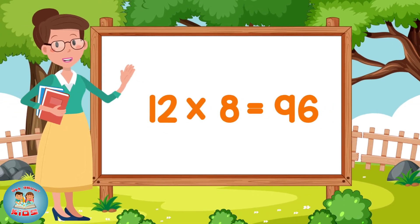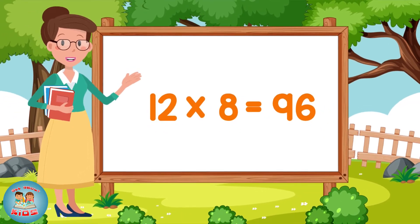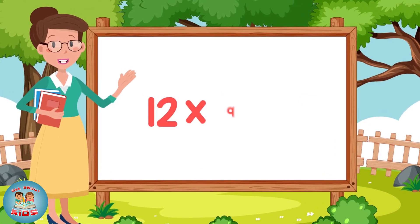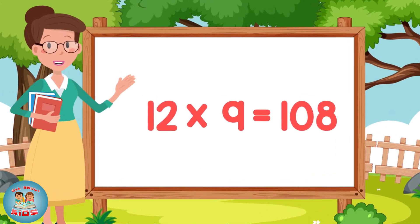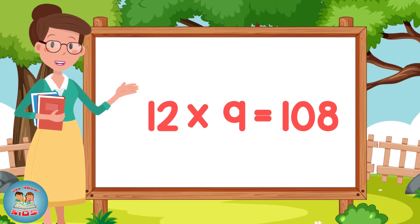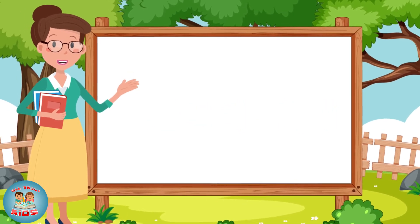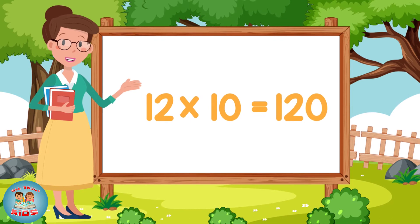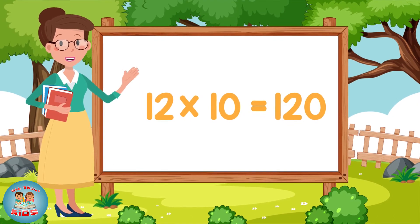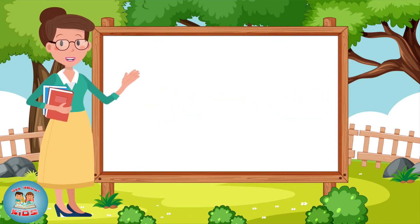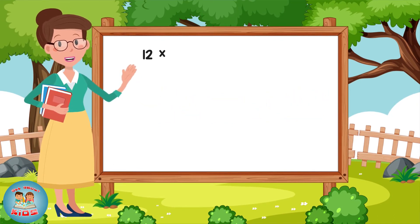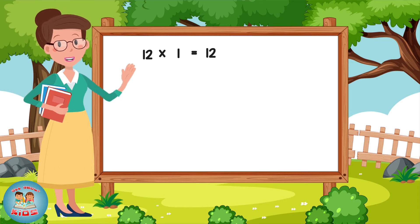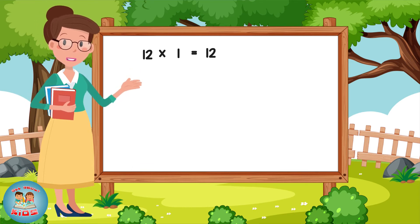Twelve eights are ninety-six. Twelve nines are hundred-eight. Twelve tens are hundred-twenty. Twelve ones are twelve.